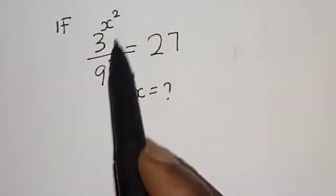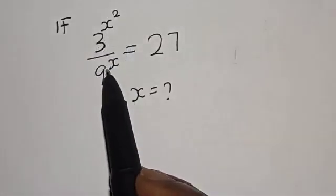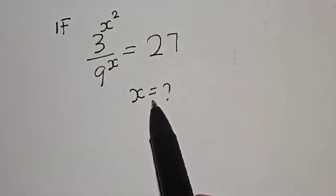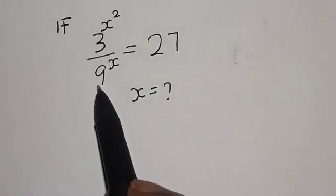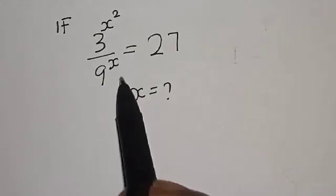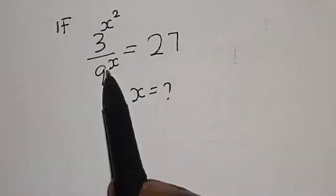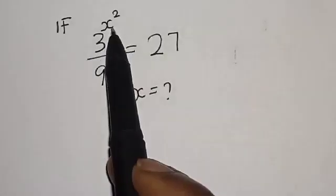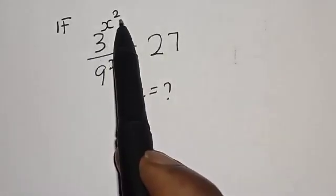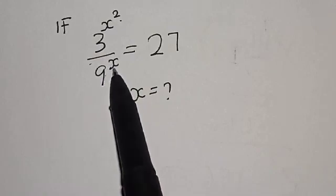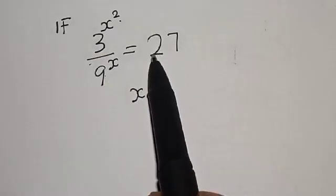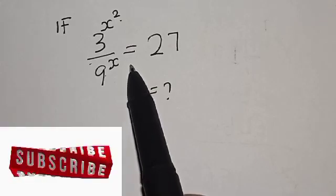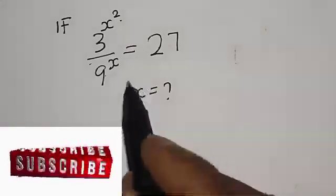If 3 raised to power s squared divided by 9 raised to power s is equal to 27, what is the value of s? Welcome to Math Gist. In this class we want to find the value of s from this exponential equation: 3 raised to power s squared divided by 9 raised to power s is equal to 27. Please like, share, and subscribe.